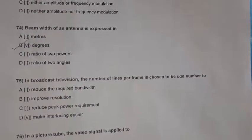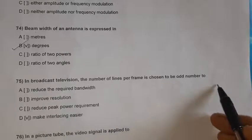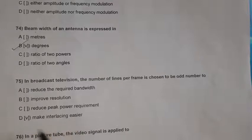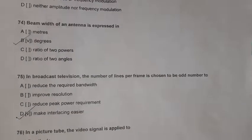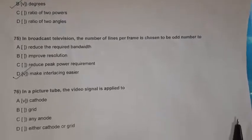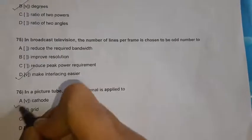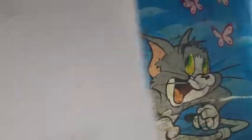Question 75: In broadcast television, the number of lines per frame is chosen to be an odd number to make interlacing easier. Option D is the right option. Question 76: In a picture tube, the video signal is applied to the cathode.